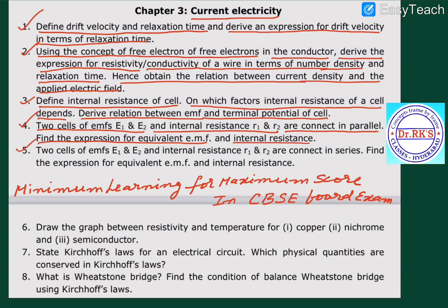Fifth question: two cells of EMF E1 and E2 with internal resistances R1 and R2 are connected in series. Find the expression for equivalent EMF and equivalent internal resistance.